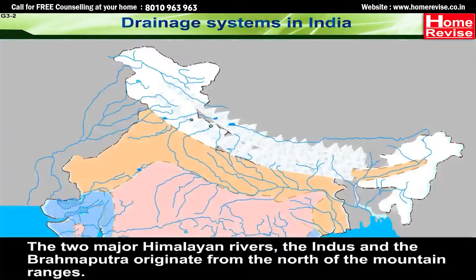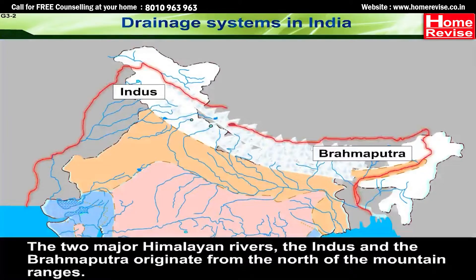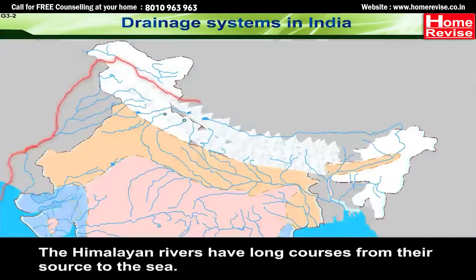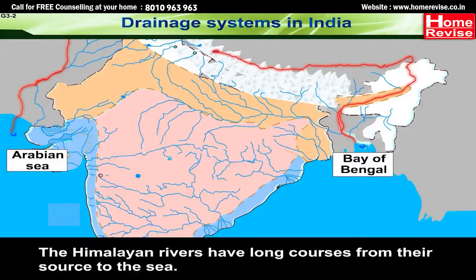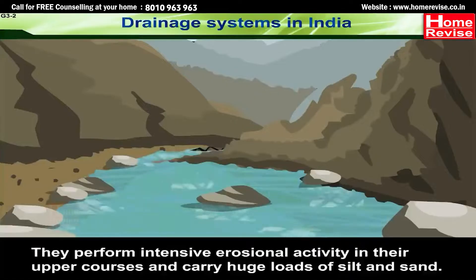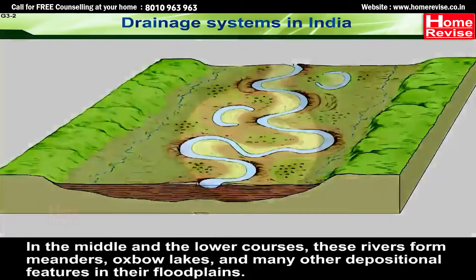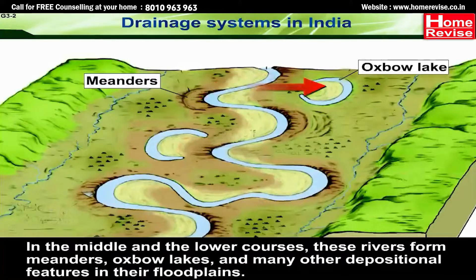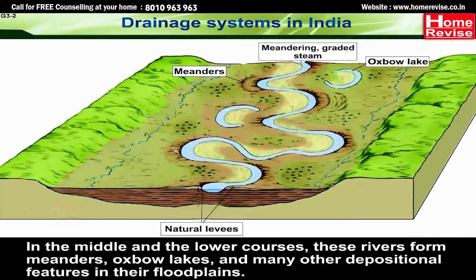The two major Himalayan rivers, the Indus and the Brahmaputra, originate from the north of the mountain ranges and have cut through the mountains making gorges. The Himalayan rivers have long courses from their source to the sea. They perform intensive erosional activity in their upper courses and carry huge loads of silt and sand. In the middle and lower courses, these rivers form meanders and oxbow lakes.